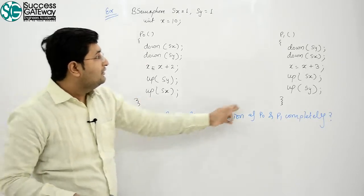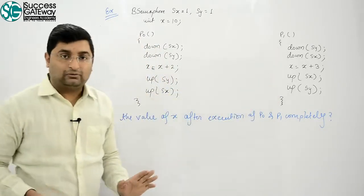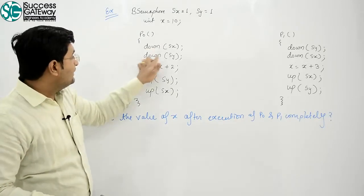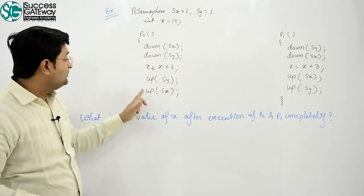Integer x is equal to 10. Process P0 executes this code: down Sx, down Sy, x equals x plus 2, up Sy.